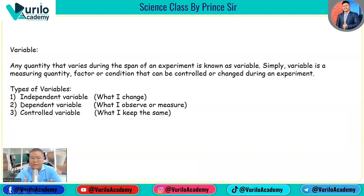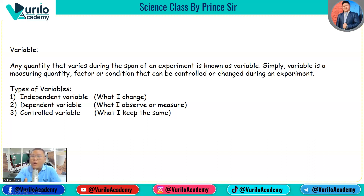On the basis of the experiment, we divide variables into three types: independent variable, dependent variable, and controlled variable. What I change is the independent variable; what I observe or measure is the dependent variable; what I keep the same is the controlled variable.